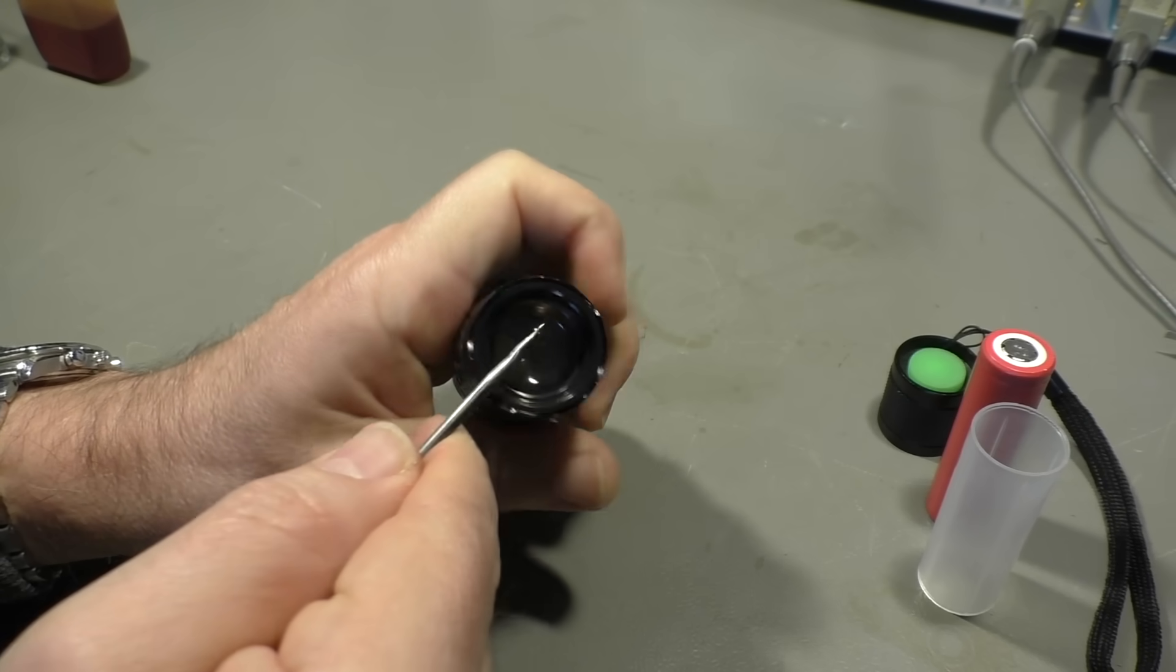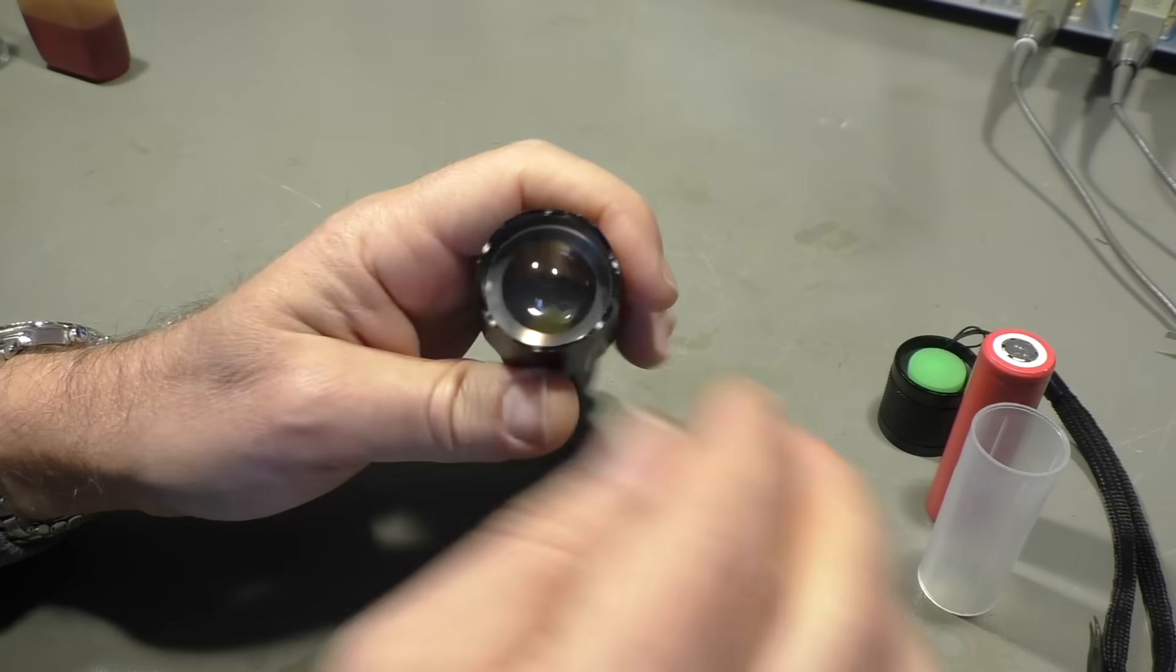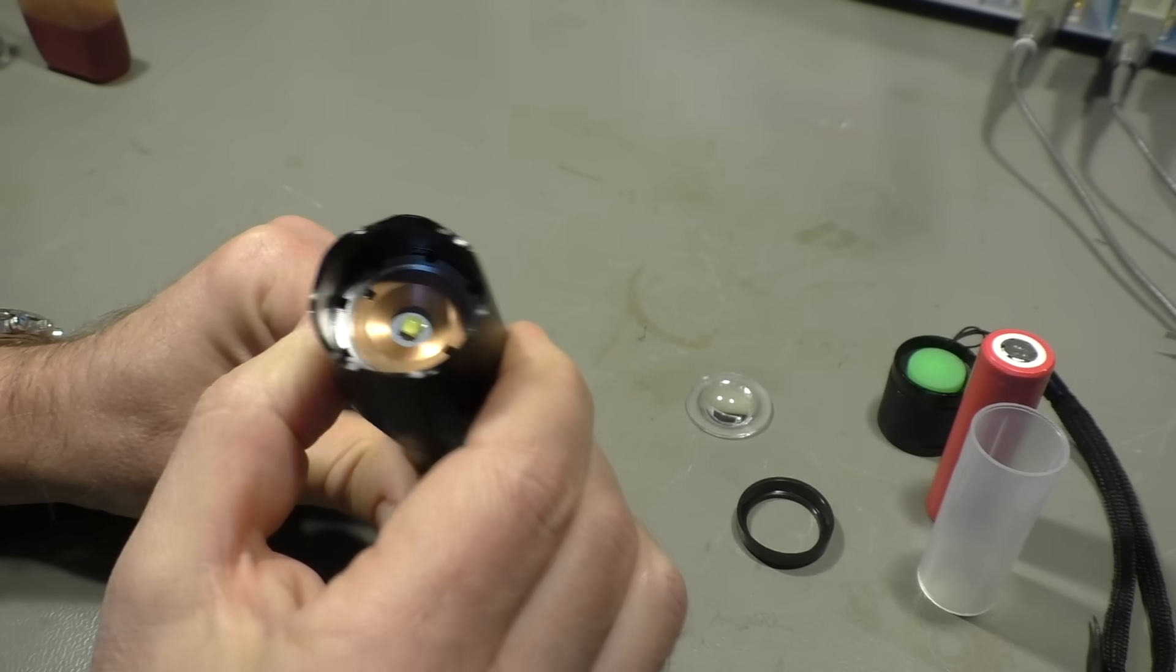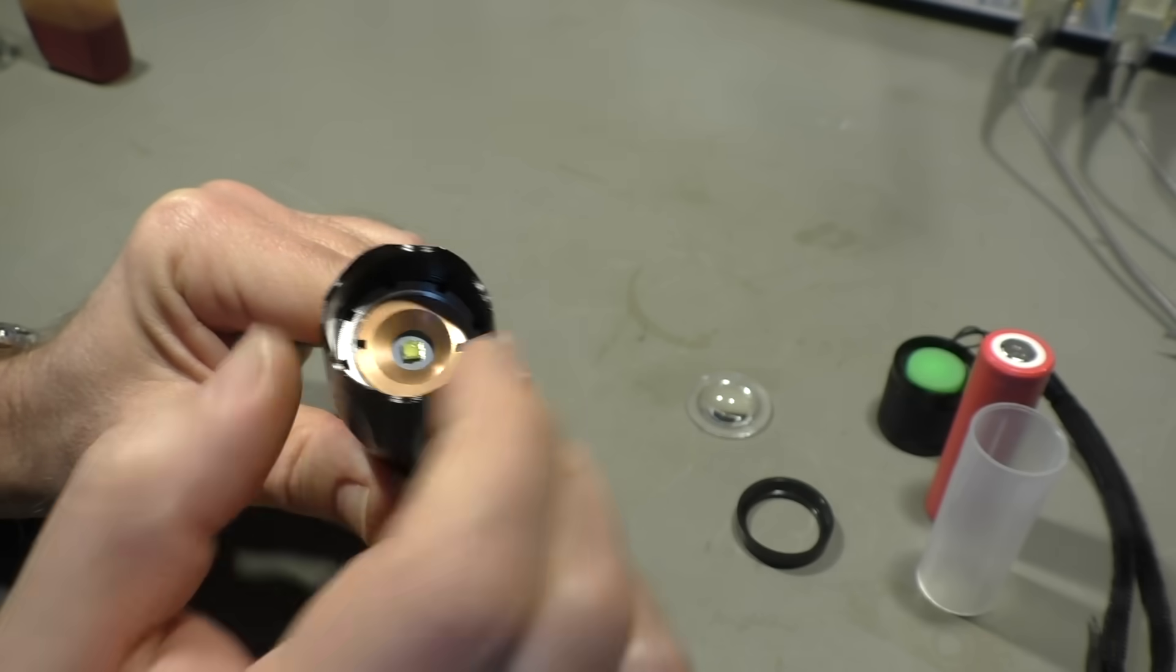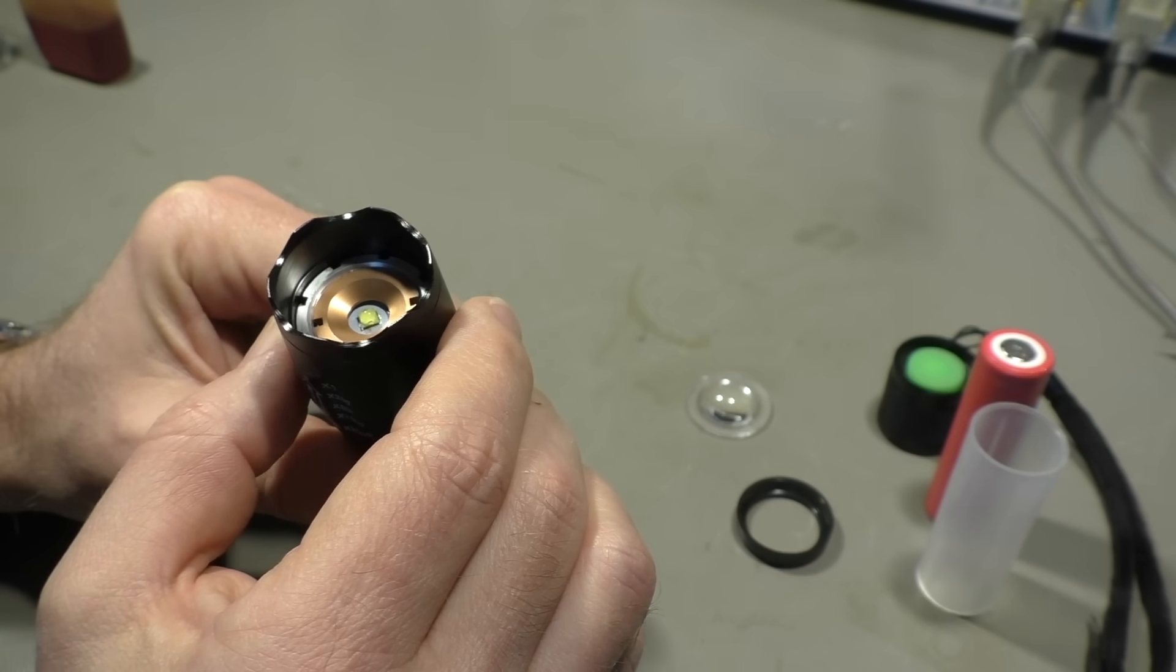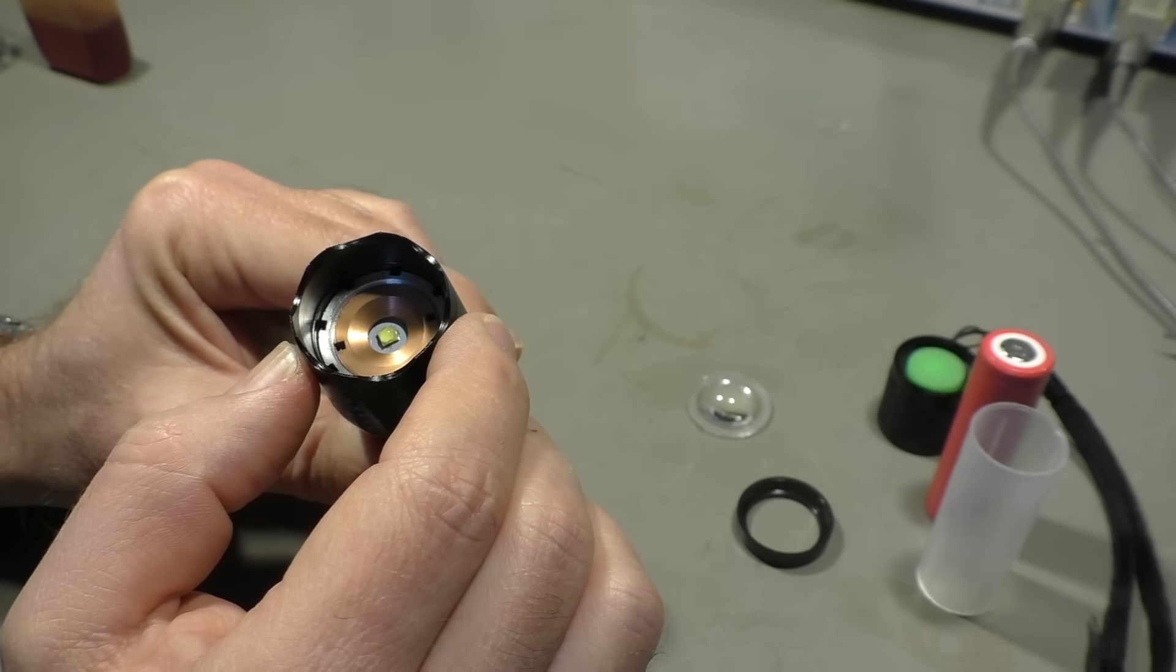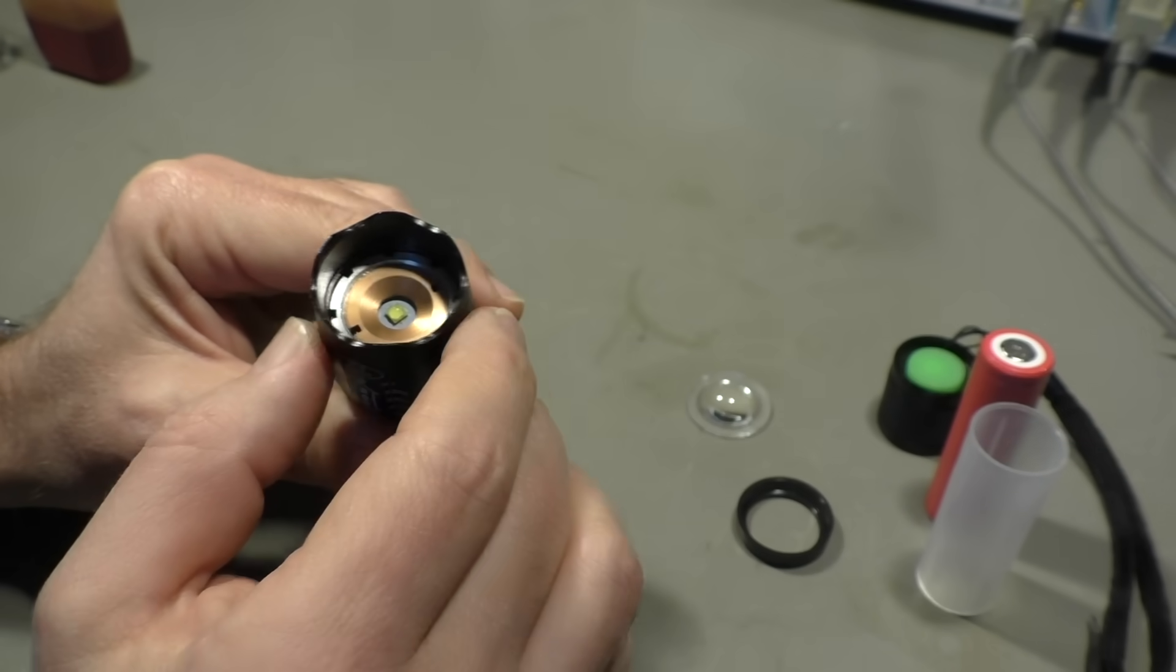So the next step will be to remove the lens. Some of these flashlights are screwed and some just have a plastic ring. And the lens falls out. So then we have the LED chip here and we also have something that looks like copper.